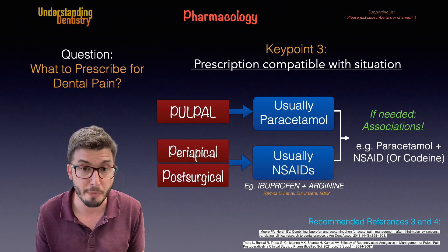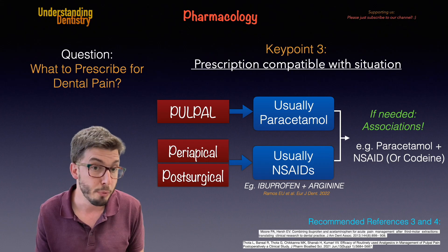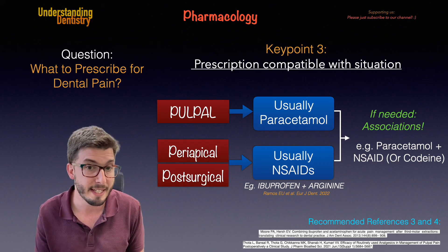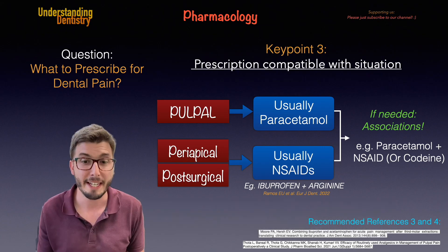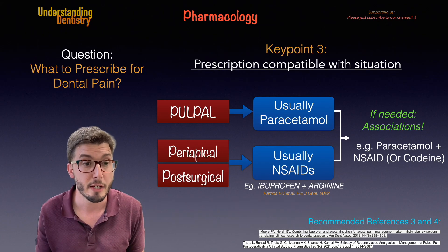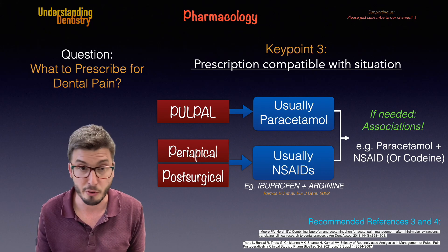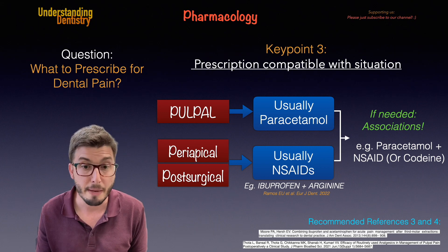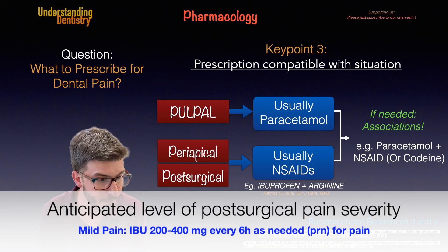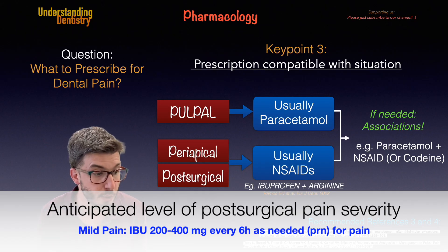Sometimes we have severe pain and we need to proceed with associations — for example, paracetamol with ibuprofen, or paracetamol with codeine. The article by Moore and Hirsch describes a dosing protocol based on pain severity. For mild pain, the authors suggest ibuprofen 200–400 mg every four to six hours as needed.